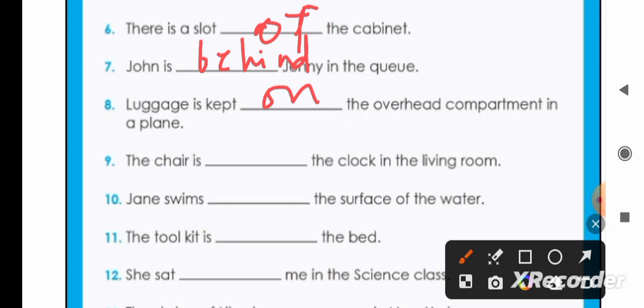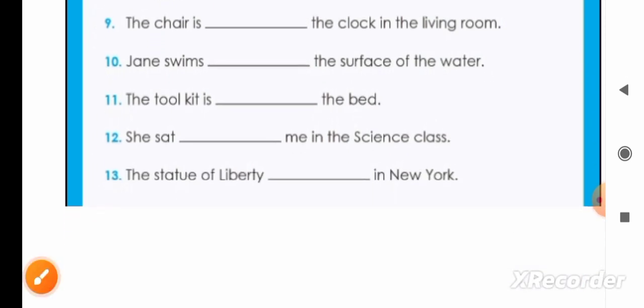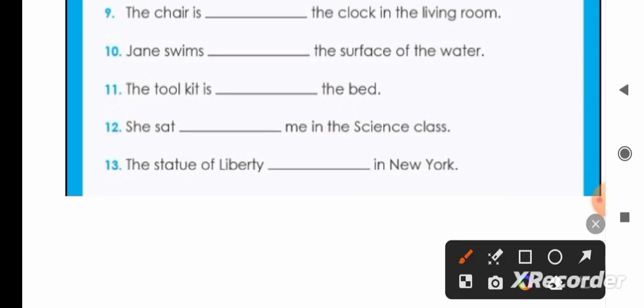Jenny swims on the surface of the water. Number eleven: the tool kit is on the bed. She sat beside me in the science classroom, it will be beside.